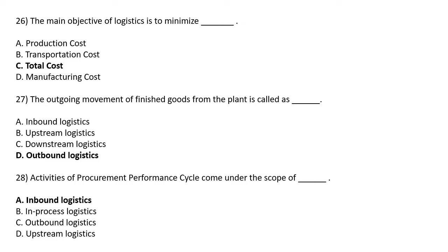Main objective of logistic is to minimize — Option A: Production Cost, Option B: Transportation Cost, Option C: Total Cost, Option D: Manufacturing Cost. Correct answer is Option C: Total Cost.